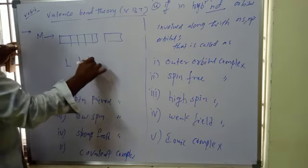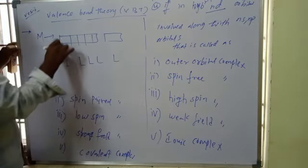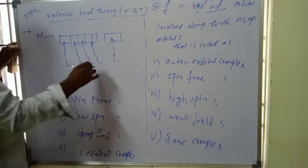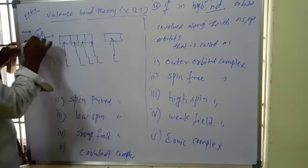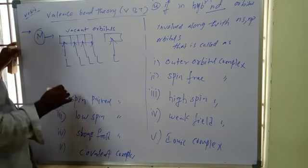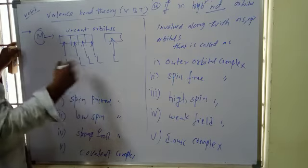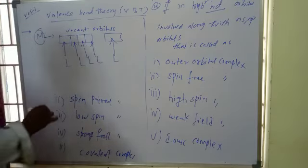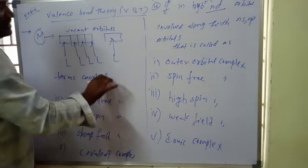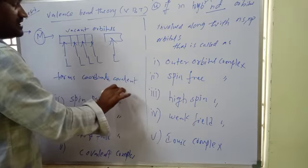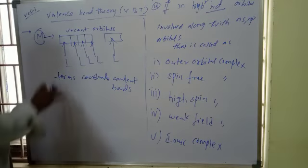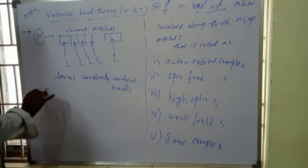All ligands can donate electron pairs to the central metal atom's vacant orbitals, forming coordinate covalent bonds between the metal and the ligand. The number of such coordinate covalent bonds formed is equal to the coordination number.